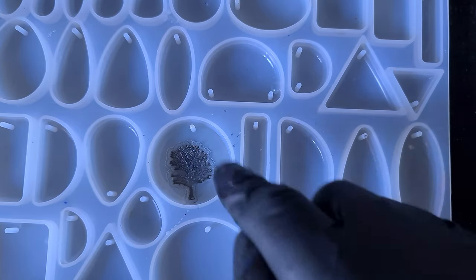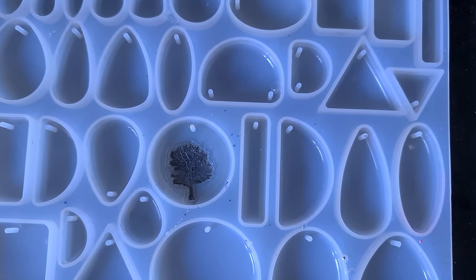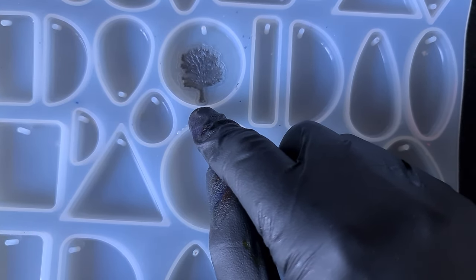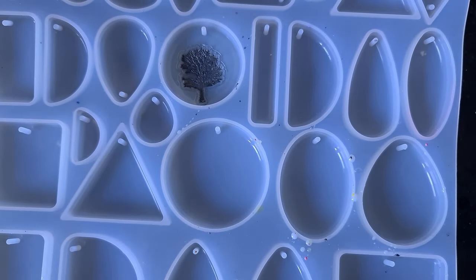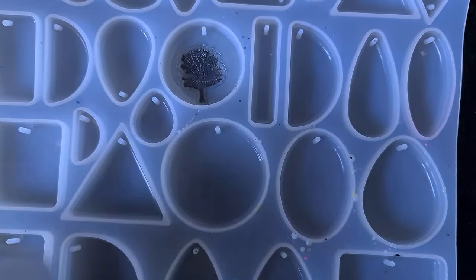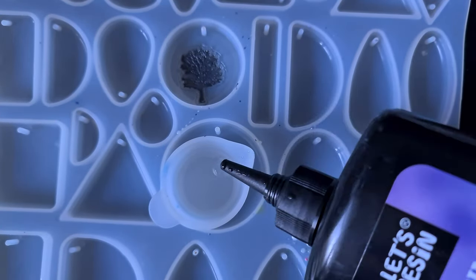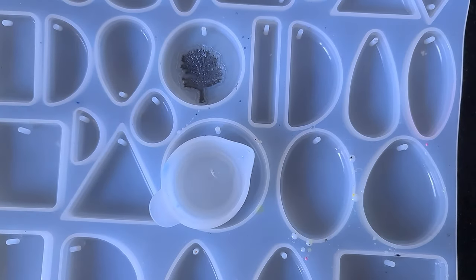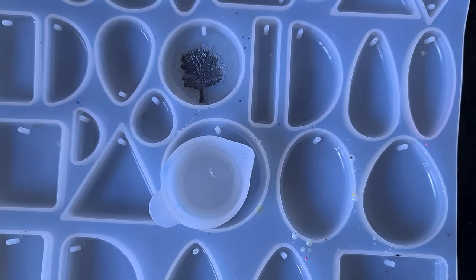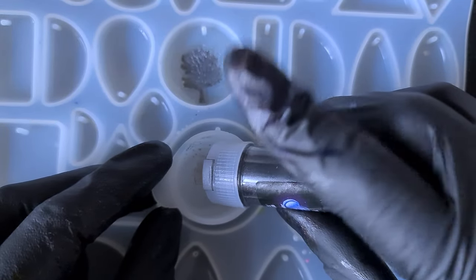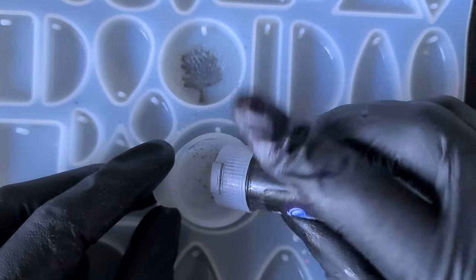So there we have our initial tree. What I'm going to do now is because the trunk is not touching the bottom of the mold fully, I'm just going to mix up a small amount of black mica powder just to make a hilltop, like a silhouette of a hilltop. Otherwise it will look like the tree's kind of levitating in the sky, from my previous experiment I found anyway.